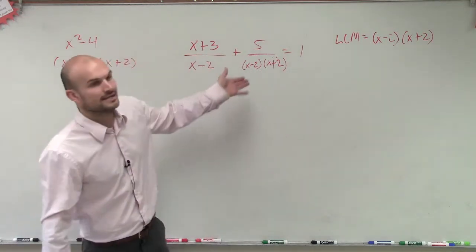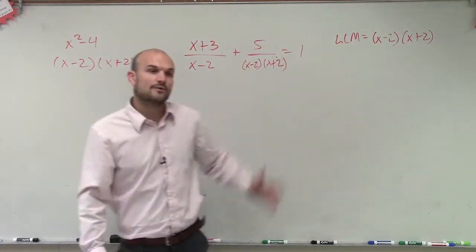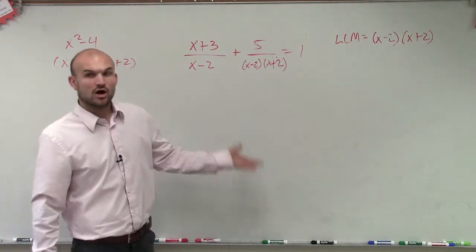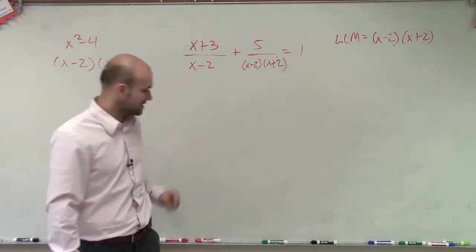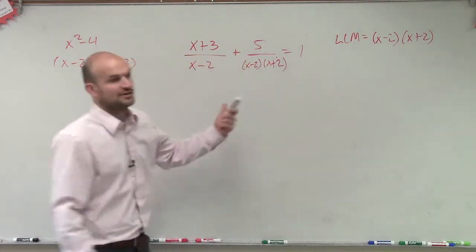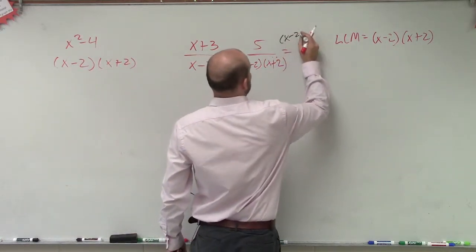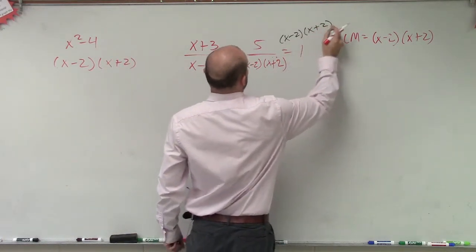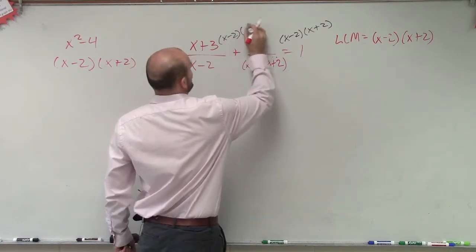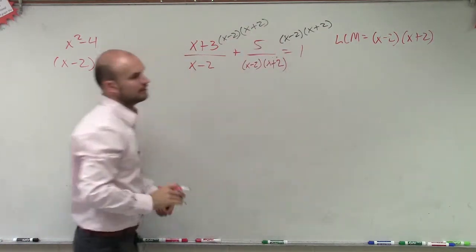Because they both divide into that. So now what I'm going to do is multiply by my LCM. So remember, we do that for every single term. We're always going to multiply by the LCM. So I multiply x minus 2 times x plus 2. And then here I multiply by x minus 2 times x plus 2.